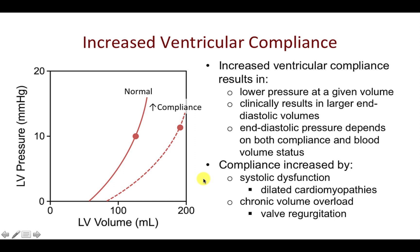Compliance can be increased by a number of pathologic conditions, including systolic dysfunction — for example, dilated cardiomyopathies or chronic volume overload conditions such as aortic valve regurgitation or mitral valve regurgitation. Whenever there is a volume overload stress on the ventricle, it responds by dilating and remodeling, in contrast to decreased compliance and hypertrophy, which occur in response to pressure overload.